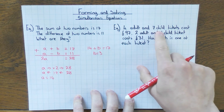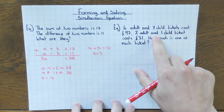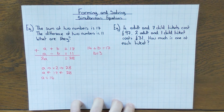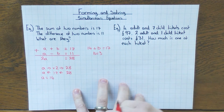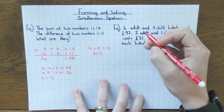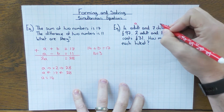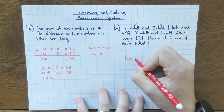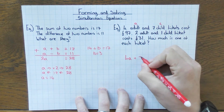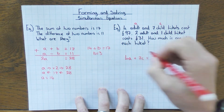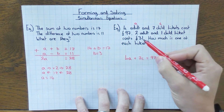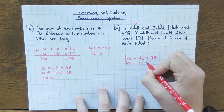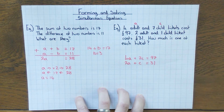Four adult and seven child tickets cost £97. Two adult and one child ticket costs £31. How much is one of each ticket? Form your two equations. I'll call adult tickets A and child tickets C. So: 4A plus 7C equals 97 — that's the first equation. And 2A plus C equals 31 — that's the second equation.